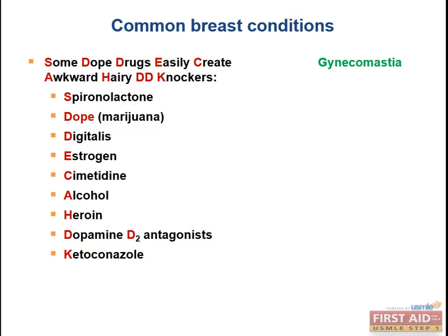USMLE wants you familiar with drugs that cause gynecomastia. Spironolactone blocks the androgen receptor directly — anti-androgenic effects. Ketoconazole inhibits the enzyme desmolase, which in the adrenal gland converts cholesterol to pregnenolone — the precursor for cortisol, aldosterone, and DHEA (an androgen) — so it has anti-androgenic effects. Marijuana, heroin, cimetidine, and digitalis (a cardiac glycoside with antagonistic effects at the DHT receptor) are also associated.